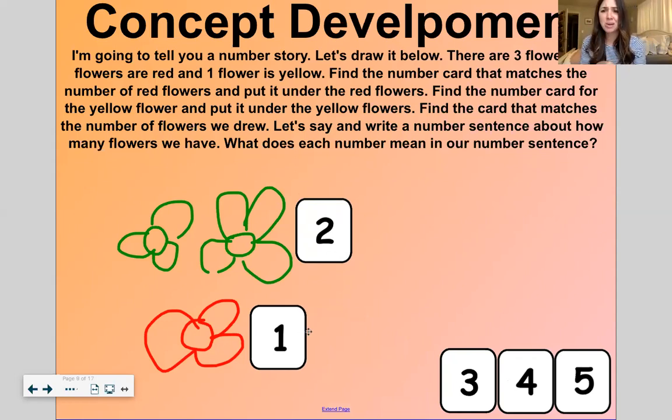Cool. So now I have 2 and 1. Oh, let's say a number sentence about how many flowers we have. A number sentence is just like a sentence we say when we are reading. But this time it's about numbers and math. So let's say two and one make three. Three. Three. Yes. Two green flowers, one red flower makes three total flowers.